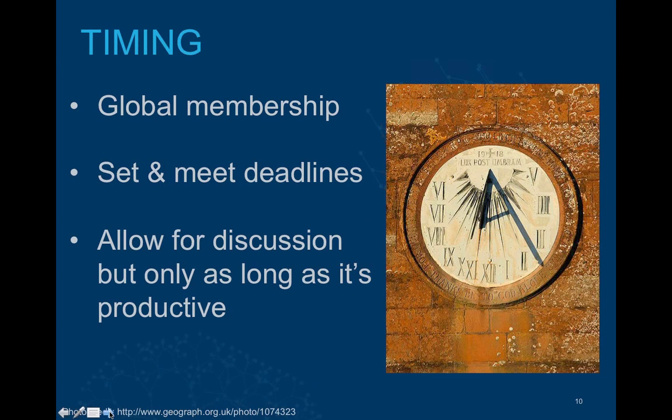When you're online, there are members of your community all around the world. The time you post a message may be the middle of the night for another member, so you may not get an immediate response. After you post a new discussion or a reply, give it a couple of days to be seen by others. If you still don't get an answer, you can always contact other active members directly. If a decision has a deadline, you should start with plenty of time — at least two weeks before usually allows everyone to participate.